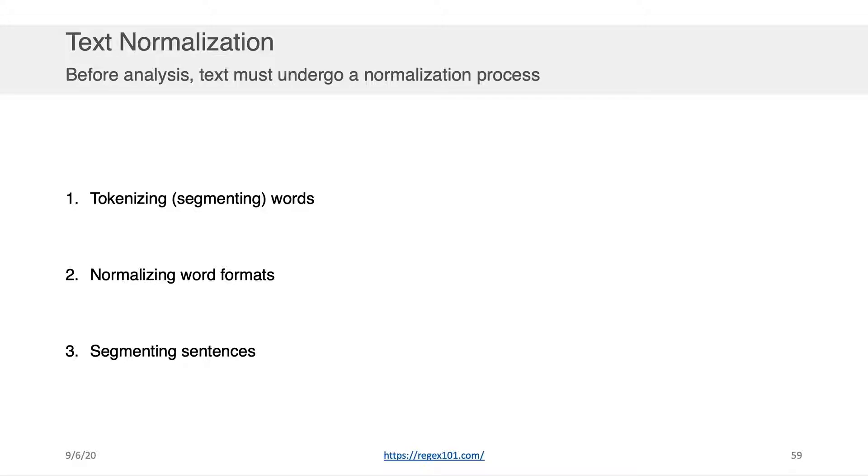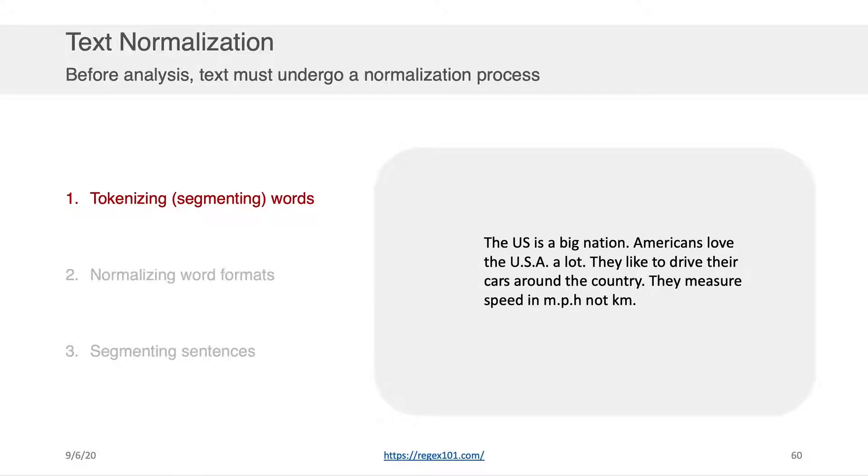Those three steps are tokenization, which is segmenting our text usually into words. The second step is normalizing word format, so that's taking symbols that might be represented differently and making sure they're represented in similar ways prior to the analysis. And then the third is splitting our text into sentences or grouping the tokens by sentence. So let's look at an example of each of these.